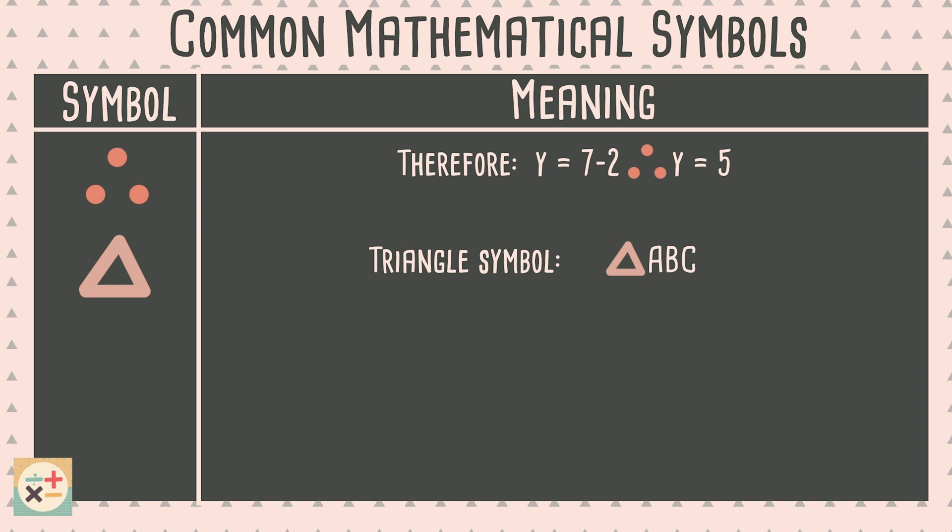The triangle symbol is used in combination with angles to refer to a triangle. In this example, we are referring to a triangle with angles A, B and C.